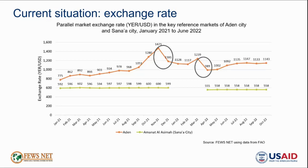However, despite positive developments, the exchange rate still displays significant volatility in response to political and economic events within any given month, and has overall depreciated by 16% since April 2022. Meanwhile, in SBA-controlled areas, the value of the local currency remains generally stable at a level 6% higher than last year, with overall stability resulting from a combination of strict control measures and better supply of foreign currency from trade and remittances.